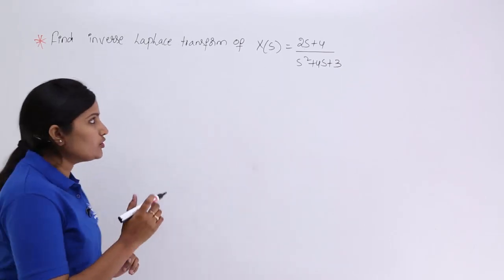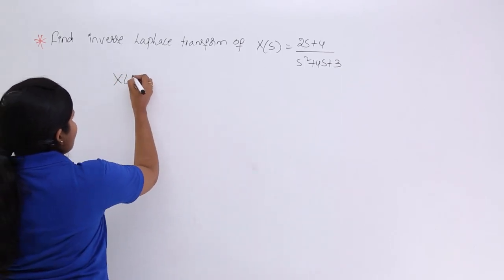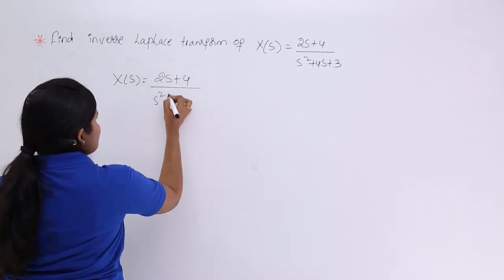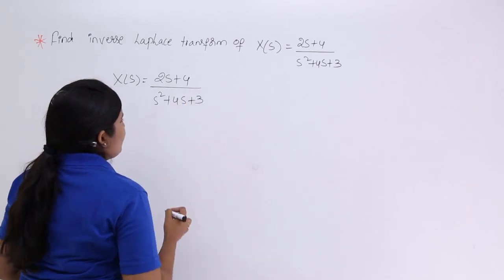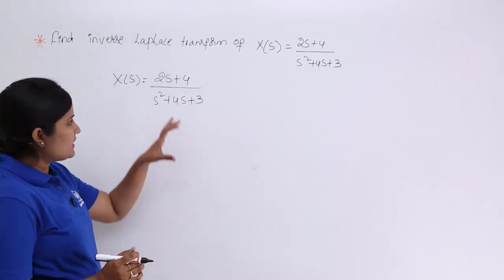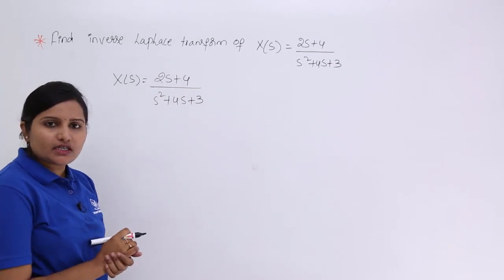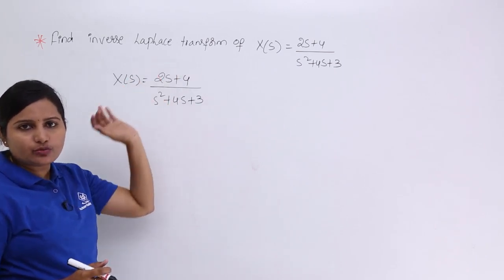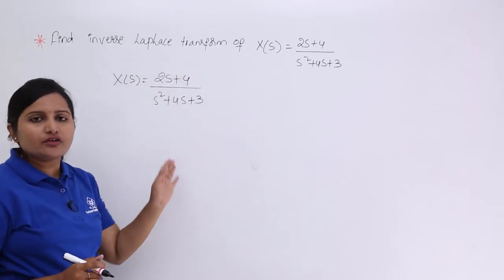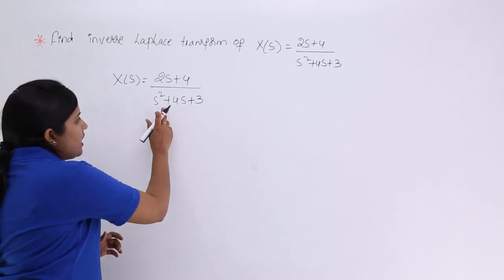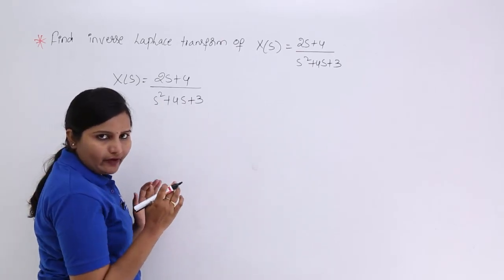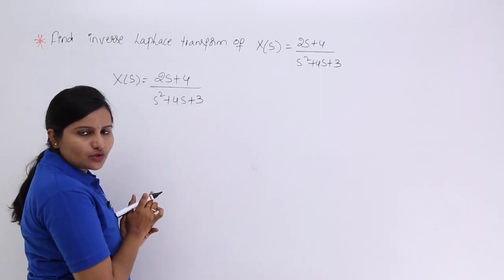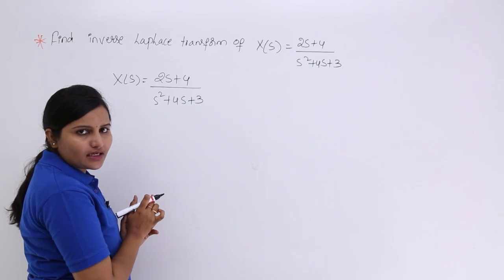Given X(s) = (2s + 4) / (s² + 4s + 3). Whenever a spectrum in the s-domain is given like this, we need to check for factors in the denominator and cancel that factor using the numerator if possible. If not, we can go for partial fractions. The factors of the denominator are 3 × 1 = 3 and 3 + 1 = 4, so 3 and 1 are the factors.